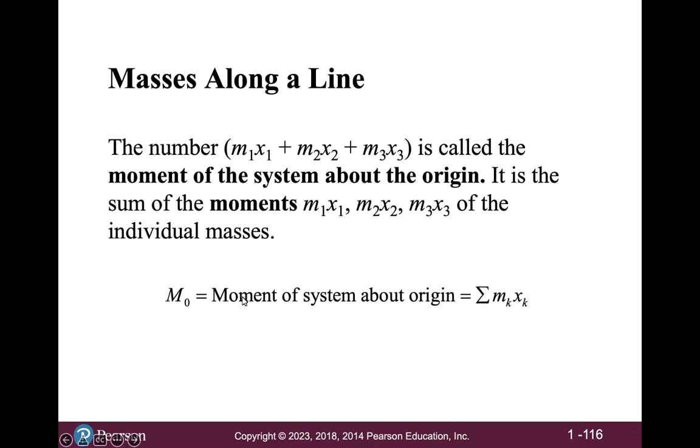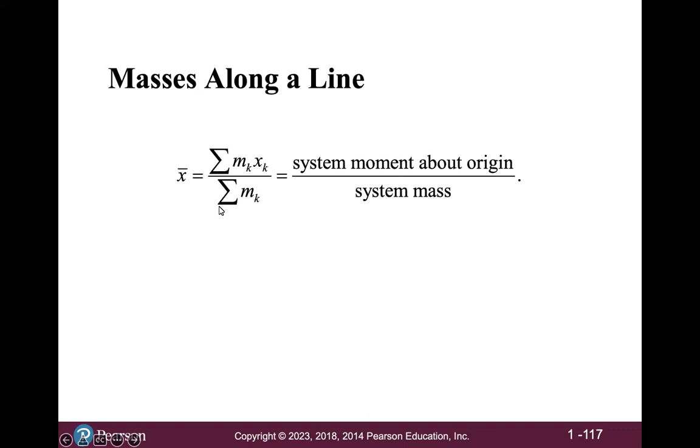That number is called the moment of the system about the origin. We will call the moment of a system about the origin m sub zero, equal to the sum of m sub k times x sub k for all values of k. The center of mass, which we'll call x bar, is equal to the system moment about the origin divided by the system mass.